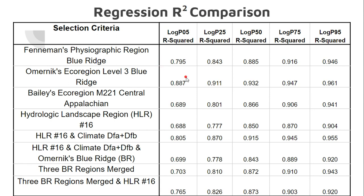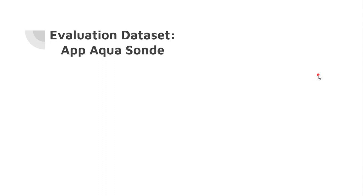The resulting R-squared values of the linear regression equations show that the best R-squared values come from one particular selection criteria. However, R-squared really only assesses how well the distribution aligns to the line of best fit — it doesn't tell you how well the equation actually produces a streamflow estimate. That's why I have to use the evaluation dataset from AppAqua.